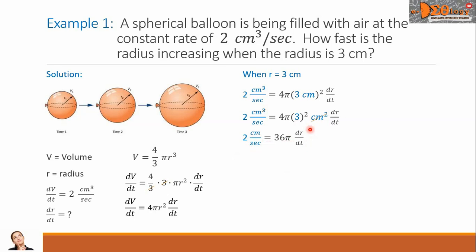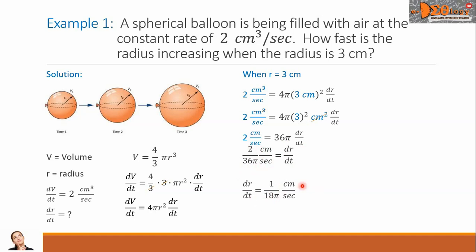We want the value of dr/dt. Dividing the equation by 36 pi, we have 2 over 36 pi cm per second equals dr/dt. Simplifying this fraction to lowest terms, dr/dt equals 1 over 18 pi cm per second. This is the rate of change of the radius when it is equal to 3 cm. This is our final answer.